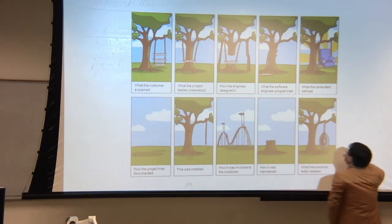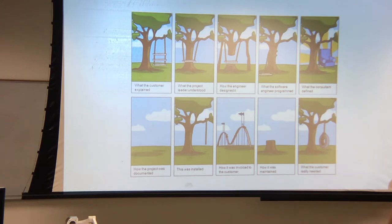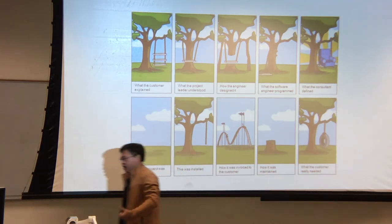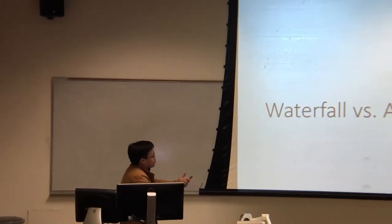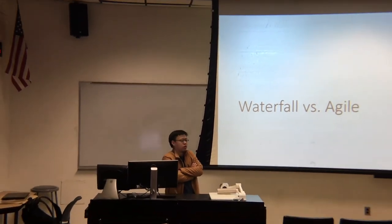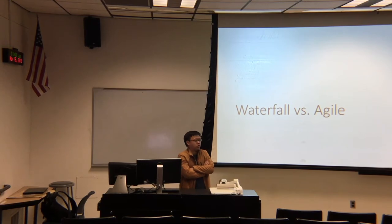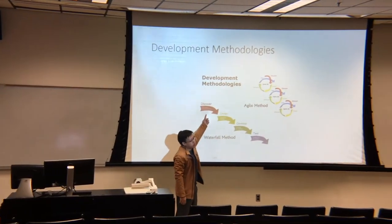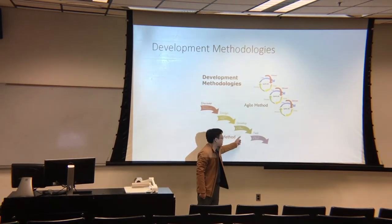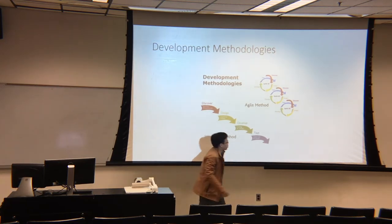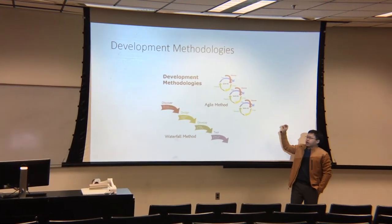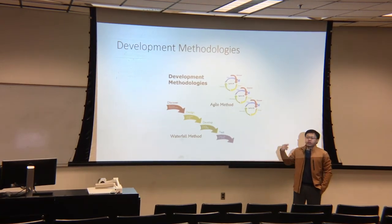The comic shows different understandings from different angles: the customer's view, the project leader's view, the engineer's design, the marketing side, and what is actually maintained. This is why we need agile design processes — because customers and project managers don't always know exactly what the project entails technically. In waterfall, you collect all requirements once, then design, develop, test, and release. But agile involves multiple iterations: discovering new things, adding features one by one, having rounds of discussion, and gradually refining requirements.